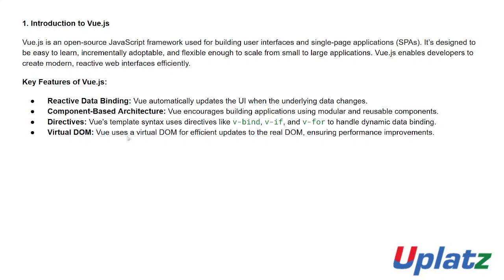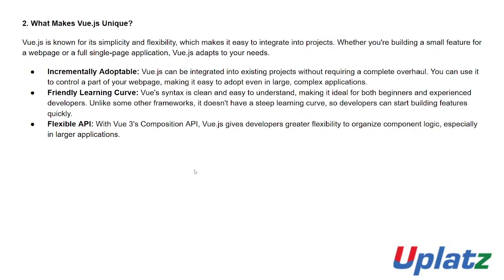Virtual DOM: Vue uses a virtual DOM (Document Object Model) for efficient updates to the real DOM, ensuring performance improvements. When something changes, Vue first updates the virtual DOM, then automatically checks whether it differs from the real DOM. If there are changes, it updates the real DOM accordingly. The virtual DOM is stored in memory, so performance is increased.